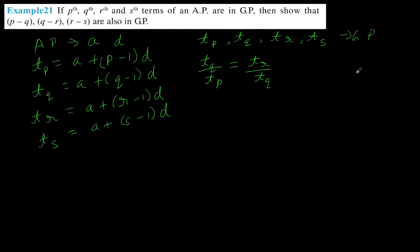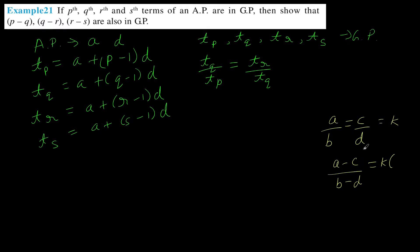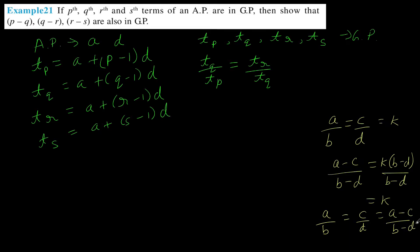Here is a useful algebraic trick: if A by B equals C by D, and we call this K, then A is K times B and C is K times D. Therefore, (A minus C) divided by (B minus D) equals K times (B minus D) divided by (B minus D), which again equals K. So A by B equals C by D also equals (A minus C) by (B minus D). If there is a ratio and you take the difference of the numerators divided by the difference of the denominators, it will still be the same ratio.